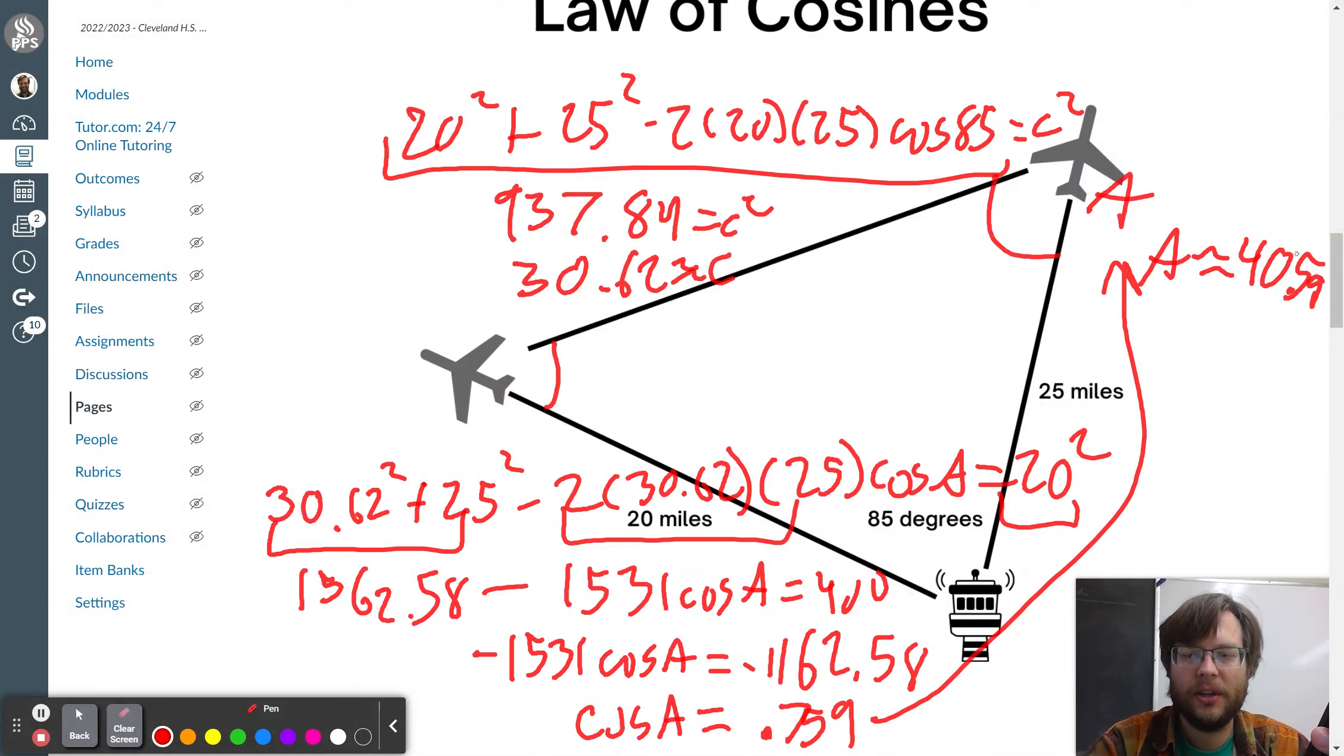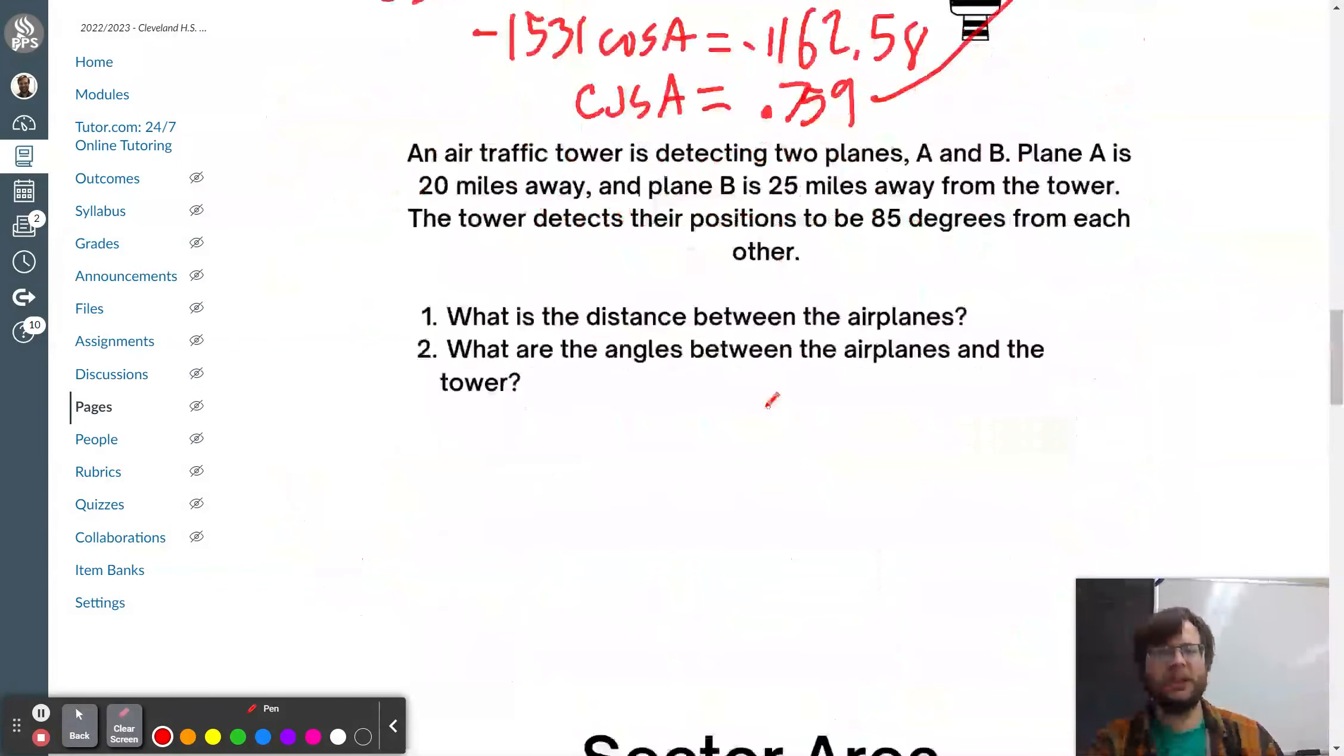And then I know that my angles all add up to 180. So, I add 85 to that and subtract from 180. And I get approximately that B is approximately 54.41. So, that's it for the law of cosines.